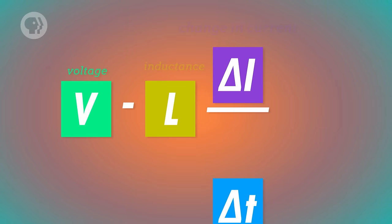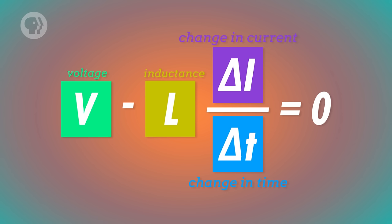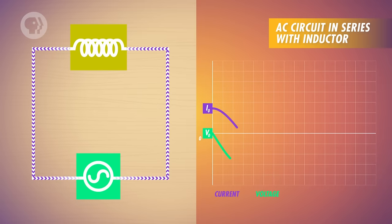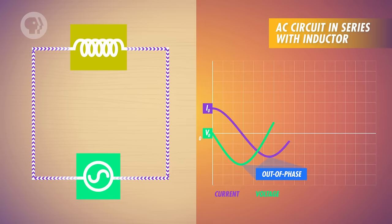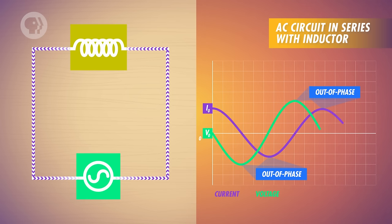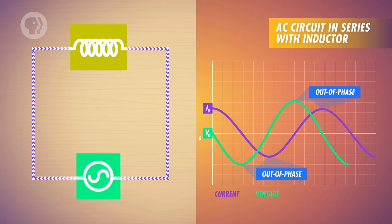For inductors and capacitors, the story is a little different. As the alternating voltage is applied across the inductor, the opposing EMF that's induced equals the voltage drop across the device. The inductor has an insignificant amount of resistance, so when it's the only device in the circuit, all the voltage must be opposed by the opposing EMF. The voltage is at maximum when the current is changing the fastest, and the voltage is zero when the current isn't changing at all. This means when the current is zero there's peak voltage, and when current is at its peak, the voltage is zero. Expressed graphically, the current lags behind voltage by 90 degrees, or a quarter cycle — so in AC circuits, inductors have current and voltage out of phase.